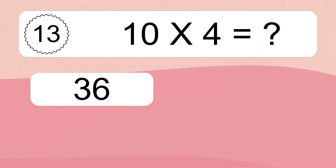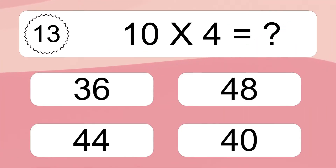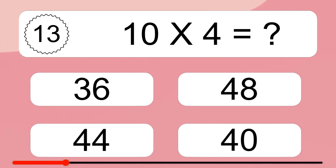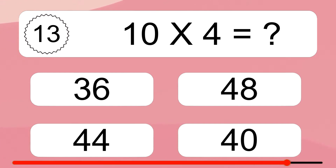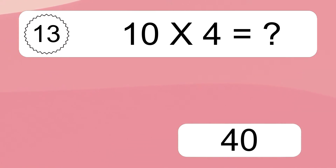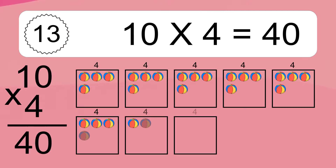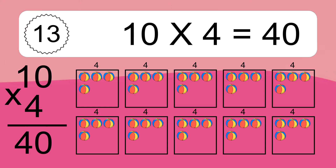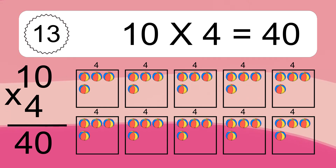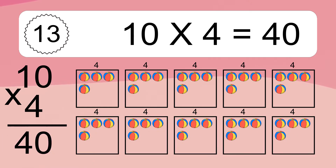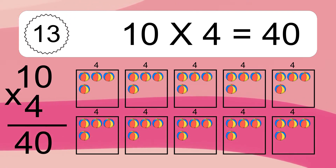10 times 4 equals what? 10 times 4 equals 40. We have 10 boxes, and each box has 4 colorful balls inside. If you count all the balls in all the boxes together, you will have 10 times 4 balls. This equals 40 balls.